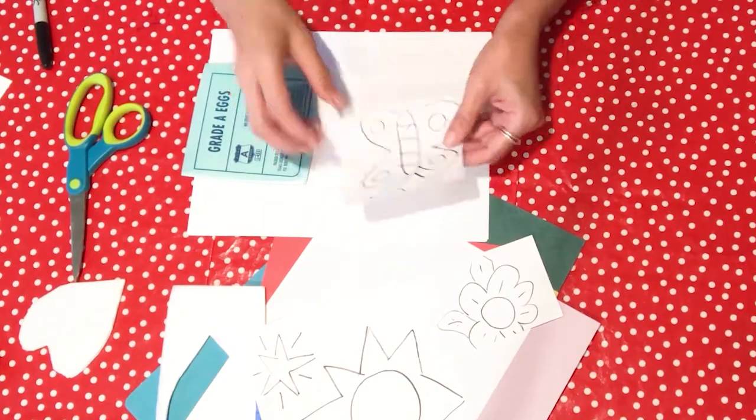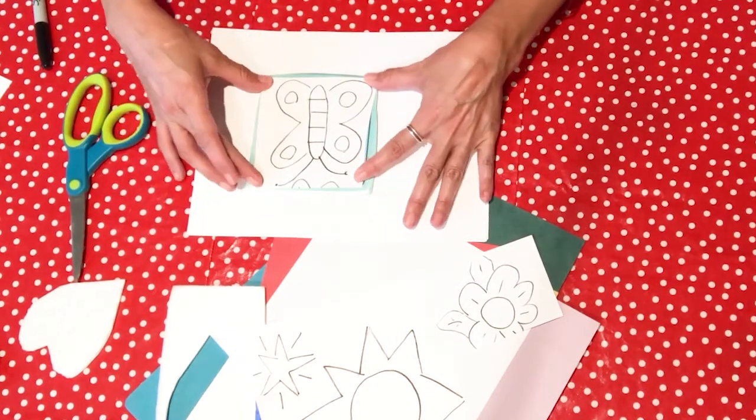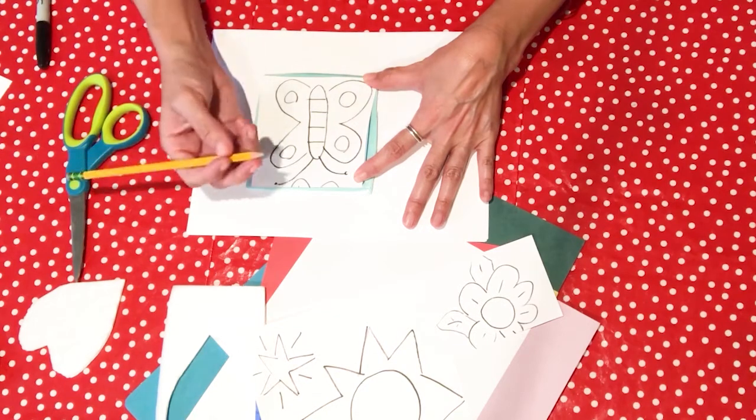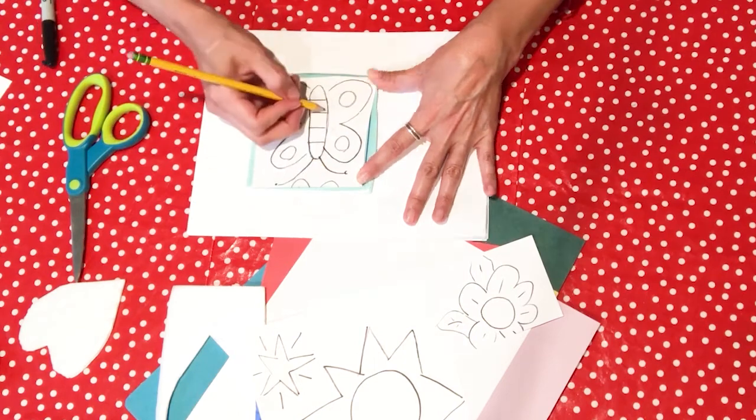Now that I've created my drawing, I will transfer it onto my piece of styrofoam. First, I'll place my drawing on top of the piece of styrofoam, centering it so that the whole drawing fits within the edges of the styrofoam piece.